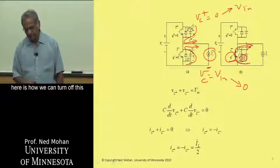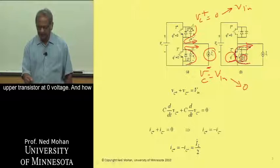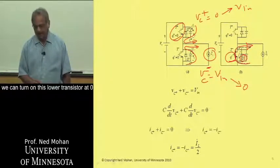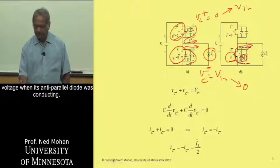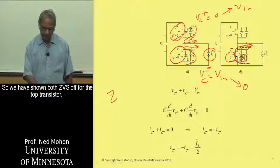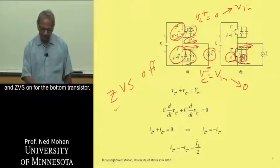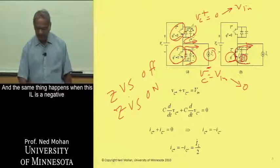So what we have shown here is how we can turn off this upper transistor at zero voltage, and how we can turn on this lower transistor at zero voltage when its anti-parallel diode was conducting. So we have shown both ZVS off for the top transistor and ZVS on for the bottom transistor,